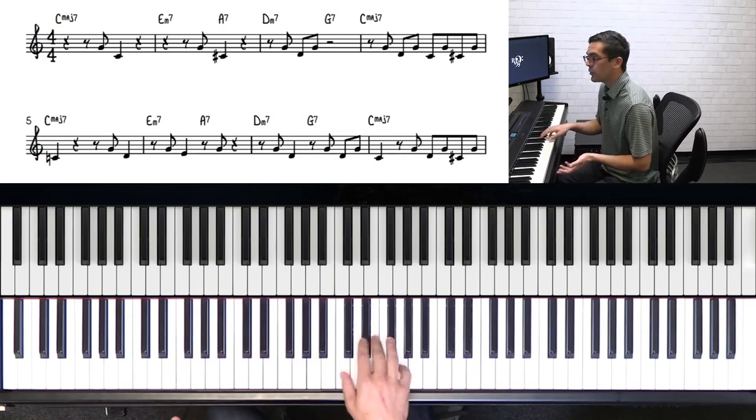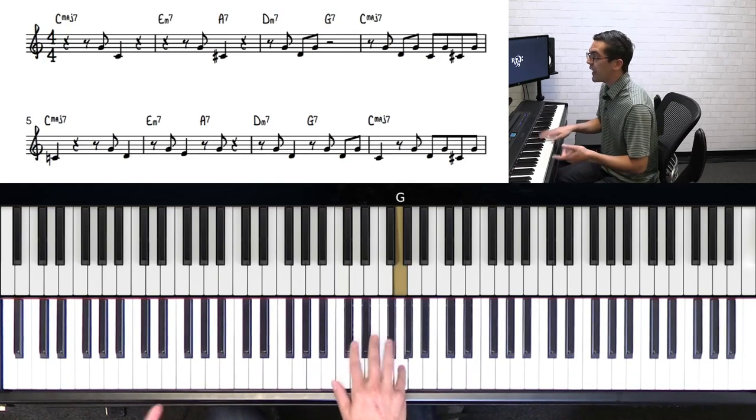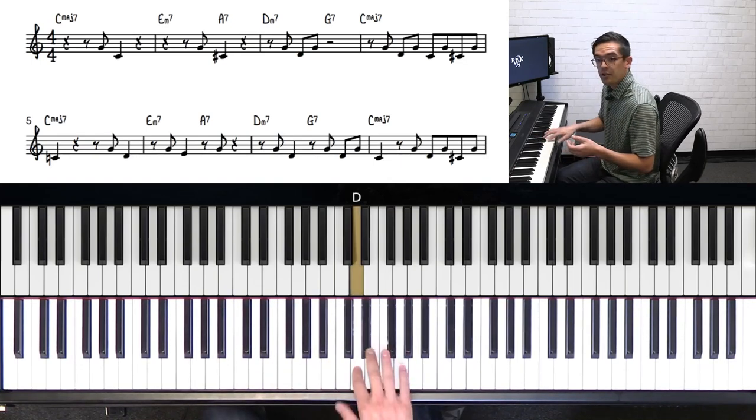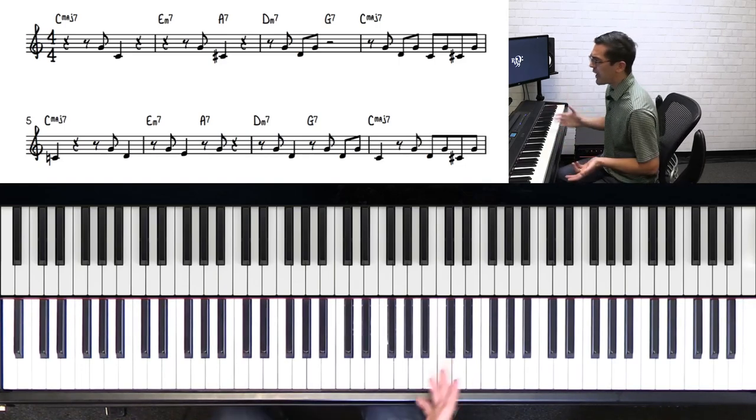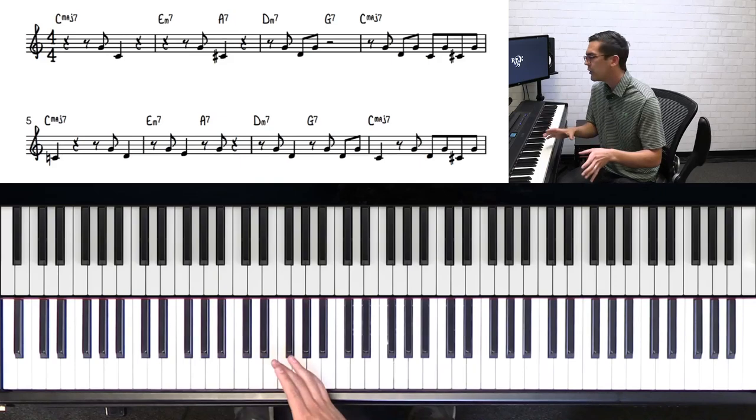He starts on the end of two. One, two, and three. Then he repeats it. One, two, and three. Then he starts it on the end of one, a different part of the measure. One, and, two, and. And he changes the rhythm a little bit. And he does that throughout the entire first eight measures, which is what makes this such an interesting but very simple solo.